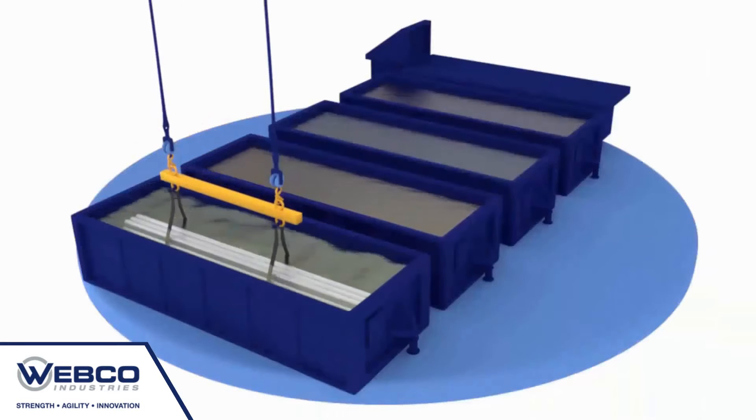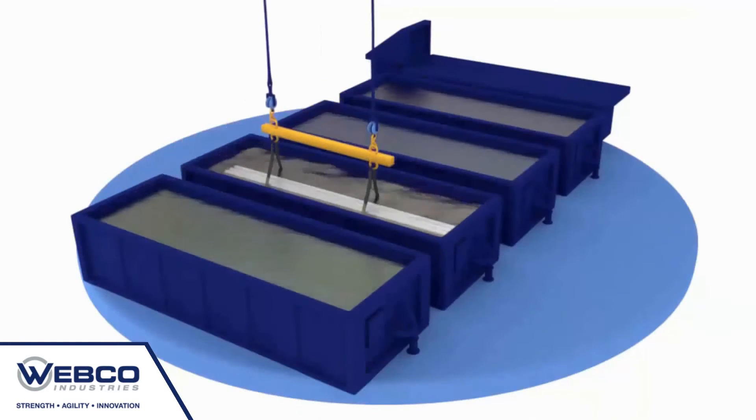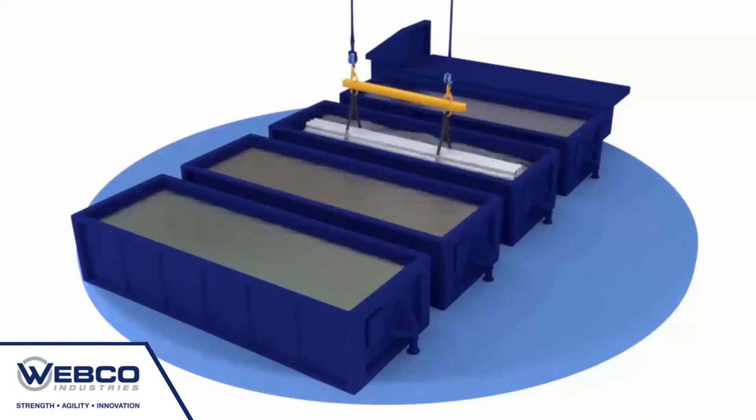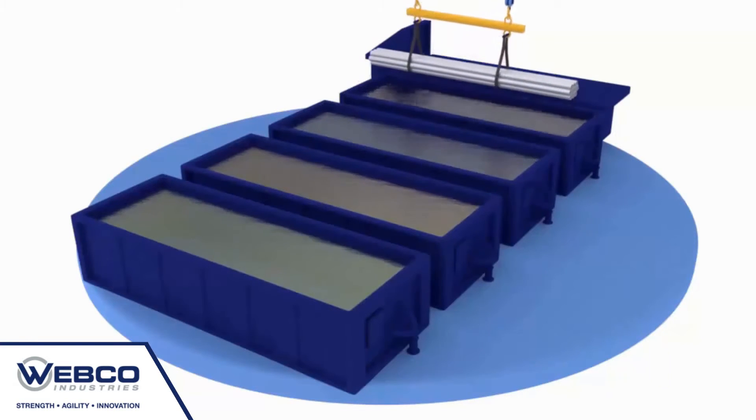The first step in the cold draw is the lubrication process, which enables the draw bench to pull tubing through smoothly. Tubes are first dipped into an acid bath to clean their surfaces, then they are dipped into a cold rinse tank before entering a lube tank. The lube is then allowed to dry.